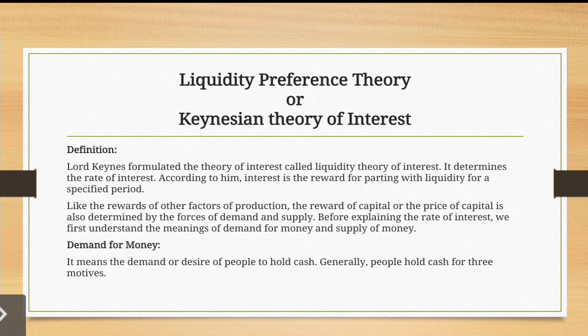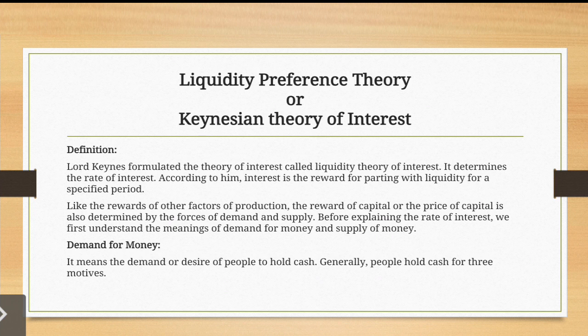This theory states that like the rewards of other factors of production, the reward of capital — or the price of capital — is also determined by the forces of demand and supply. Just as we give wages to labor, rent to land, and profit to organization, the reward of capital, which we call interest, is also determined by demand for money and supply of money.